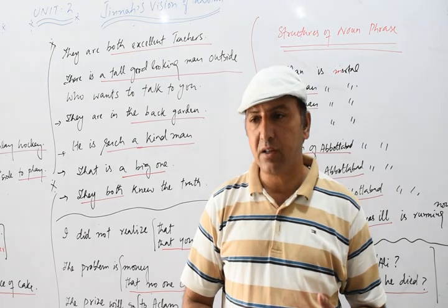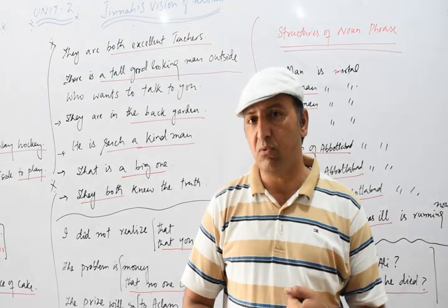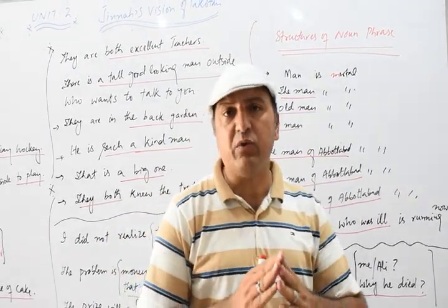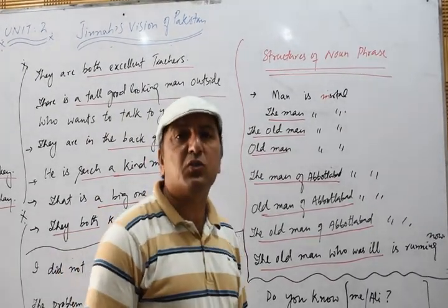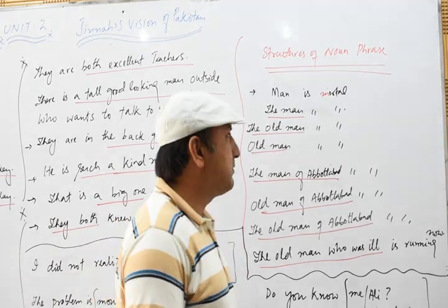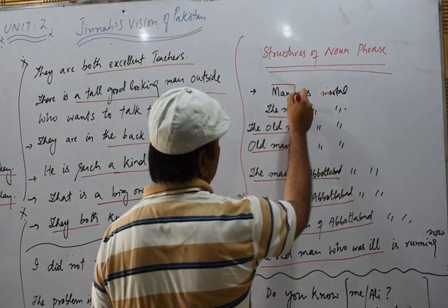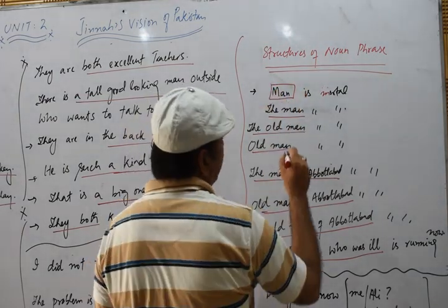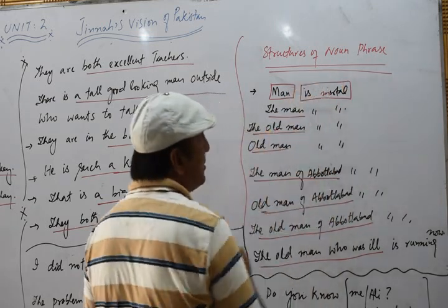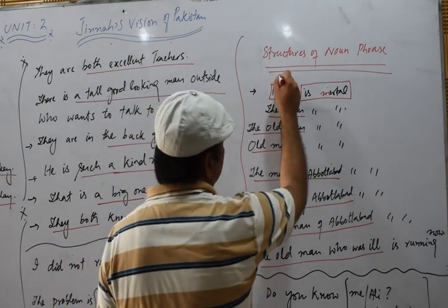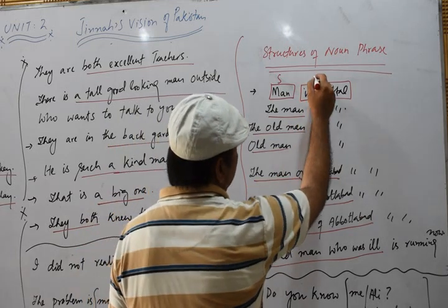Before going into detail, let me tell you about the different structures of a noun phrase. A noun phrase might have different shapes and different structures. Let's take a start — open your books at page 29. We have the sentence 'Man is mortal,' with subject 'man' and predicate 'is mortal.'